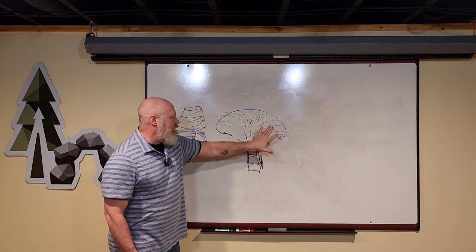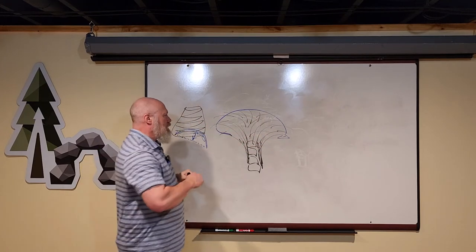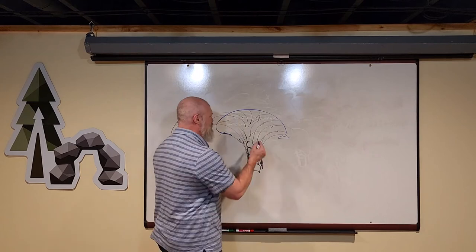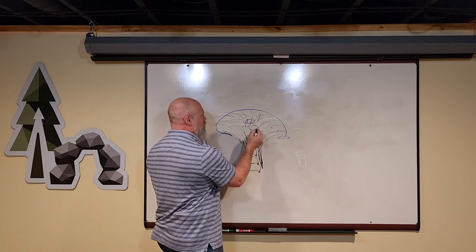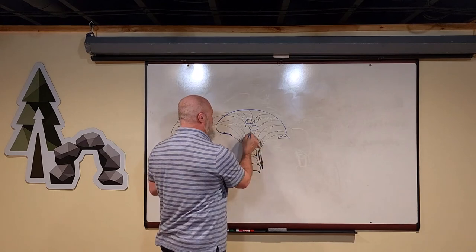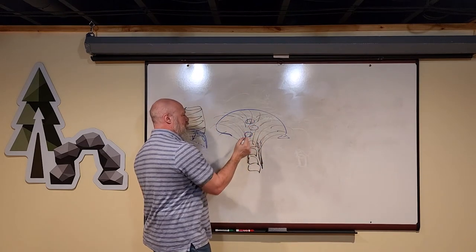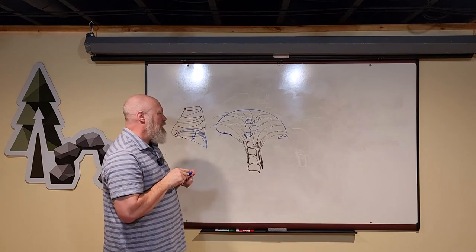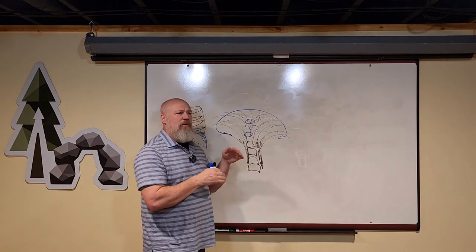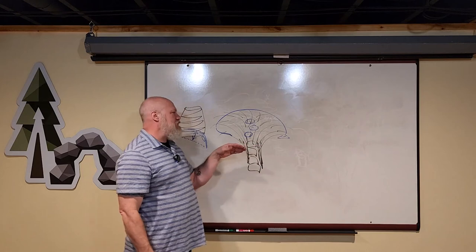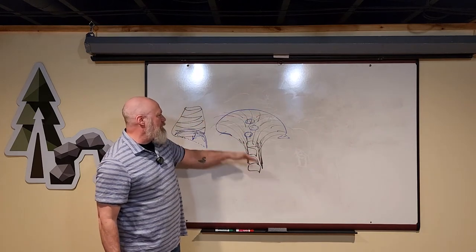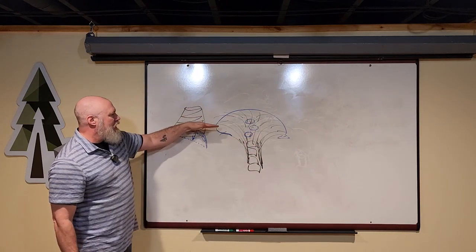But the diaphragm is going to rise and fall through contraction and relaxation all day. And it's closed off almost completely. There are a few hiatus. There's an esophageal hiatus and an aortic hiatus and a caval hiatus for your esophagus, your aorta and your inferior vena cava to pass through. And there's a few others where nerves are going to pass through there, but it basically closes off your abdomen from your thorax.